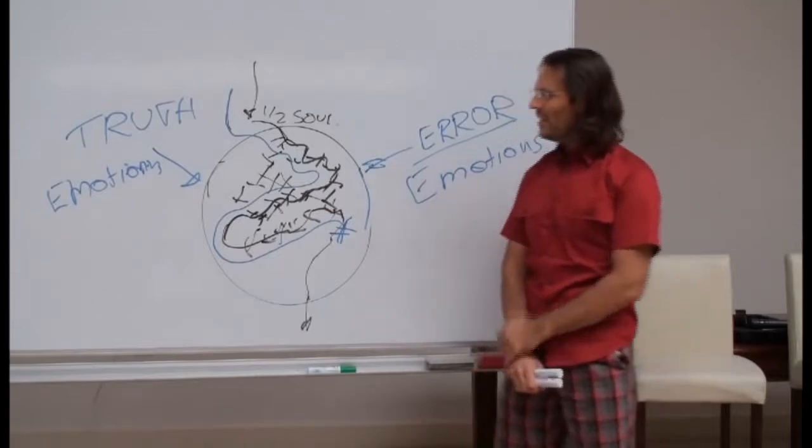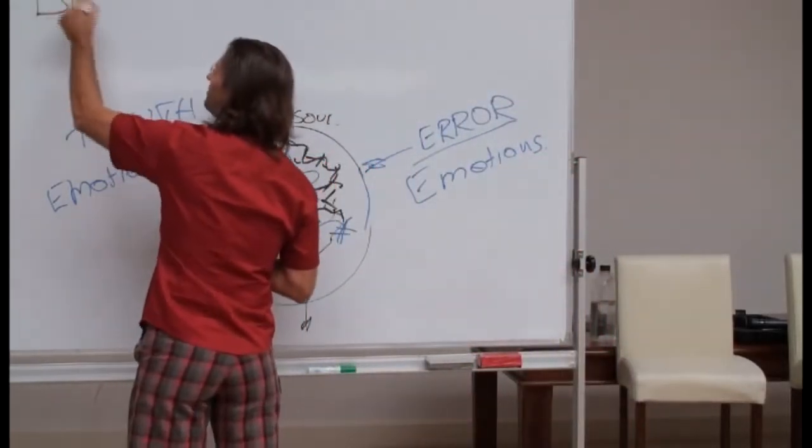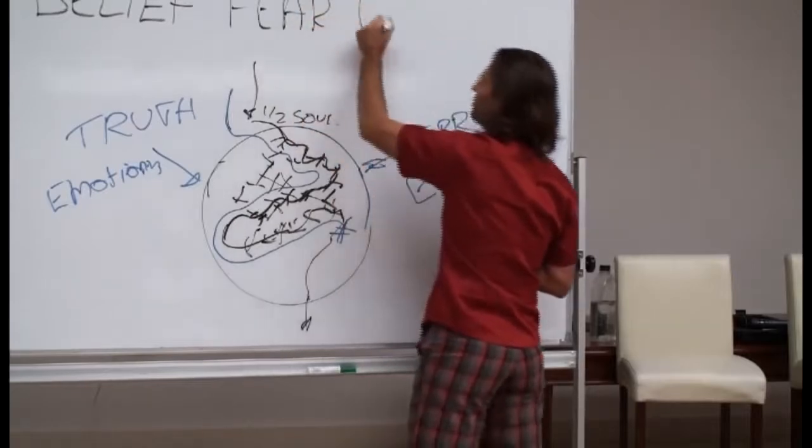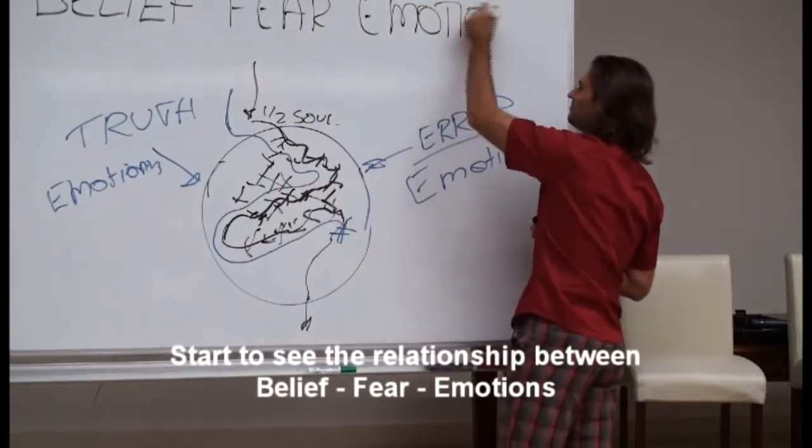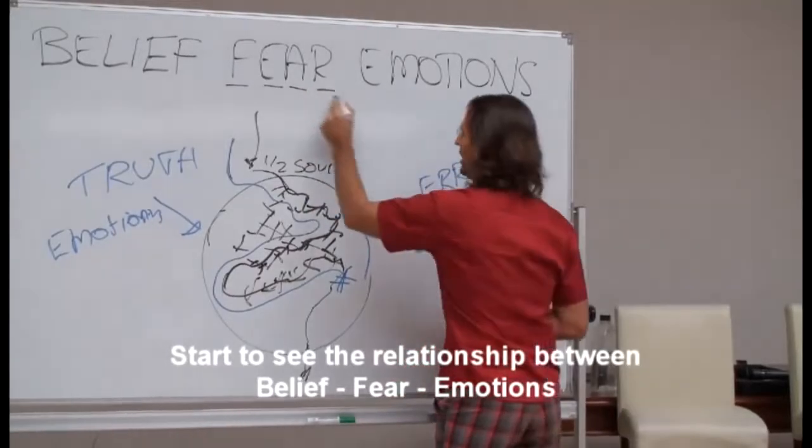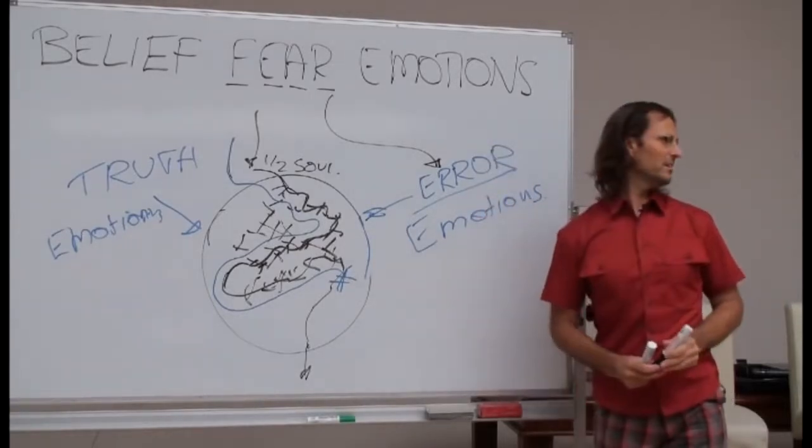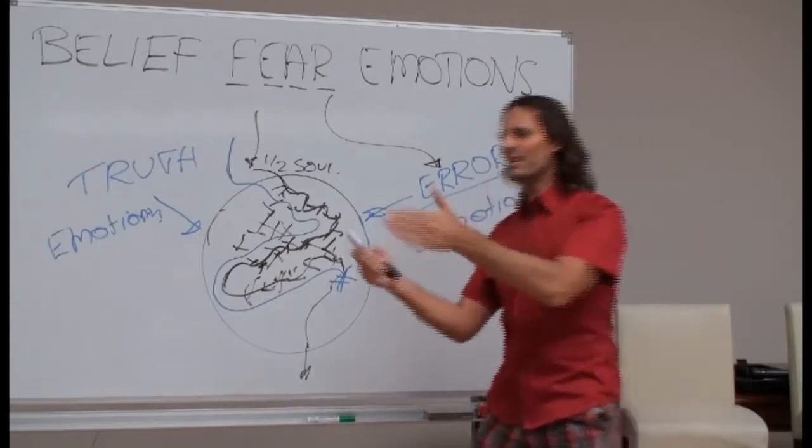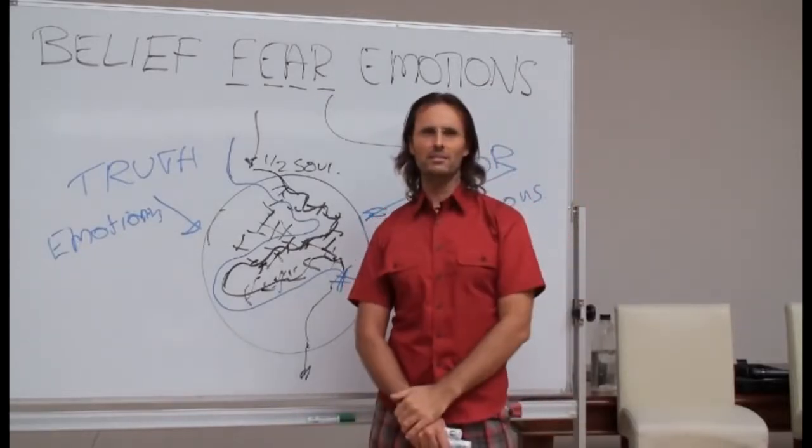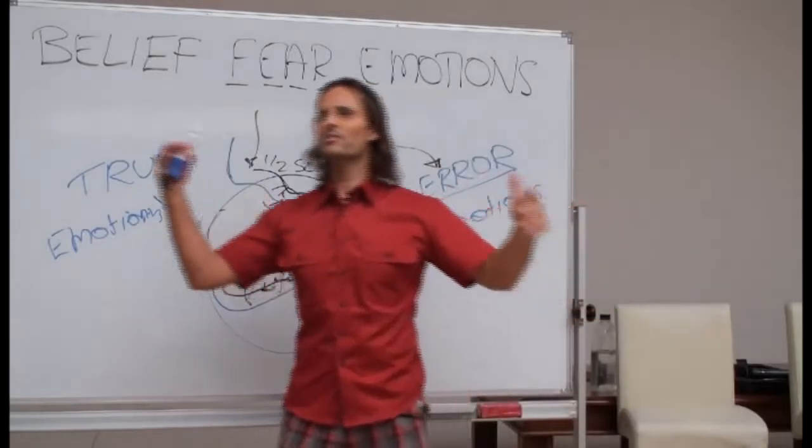Now understanding this is very important because we start to see the relationship between belief, fear, and emotions. Now remember the fear is the false expectations appearing real. In other words it's the error looking like, emotionally looking like it is truth. So when I make a statement there is no justification for violence ever, for many of us when we first heard that statement we felt very much in disagreement with that.